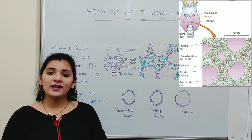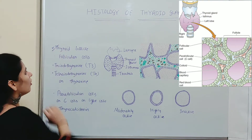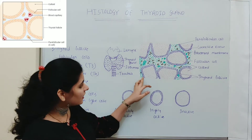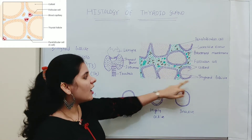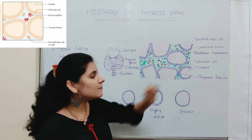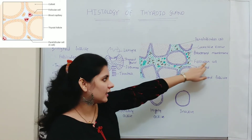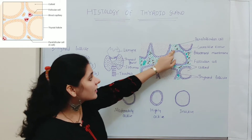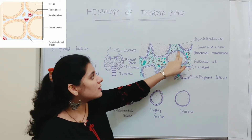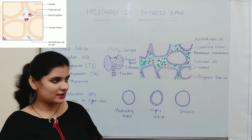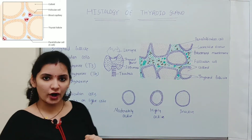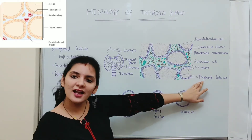The parenchyma part of the thyroid gland mainly consists of thyroid follicles, which are known as the structural unit of the thyroid gland. As you can see in this diagram, these round or oval-shaped structures are thyroid follicles, each made up of a single layer of simple epithelial cells known as follicular cells. These follicular cells rest on the basement membrane and enclose a cavity known as the follicular cavity, which contains a gelatinous or gel-like substance known as colloid.